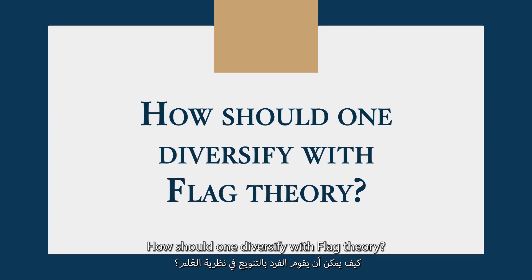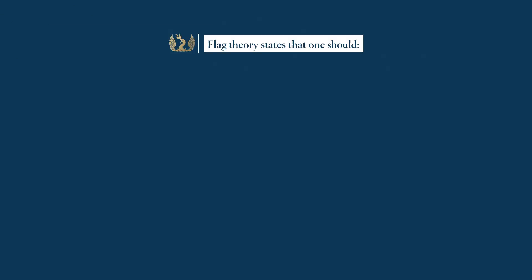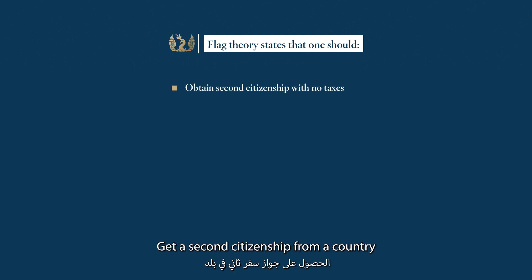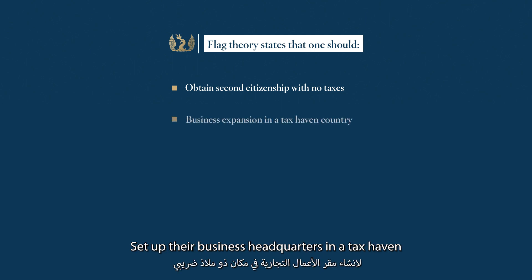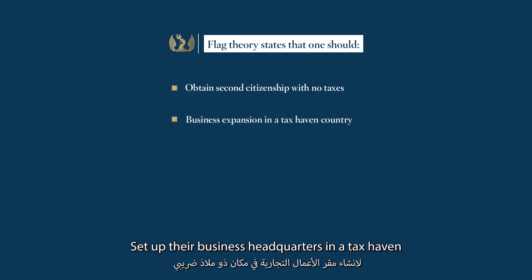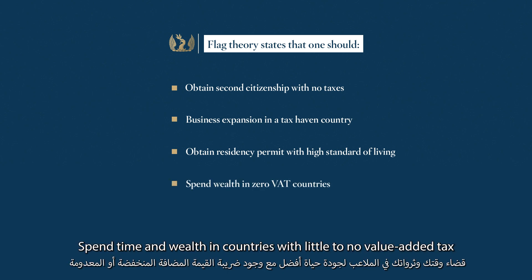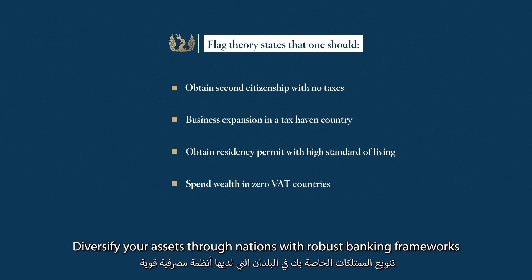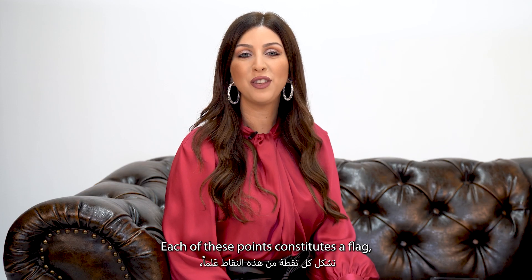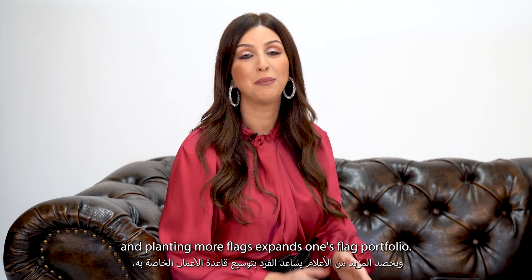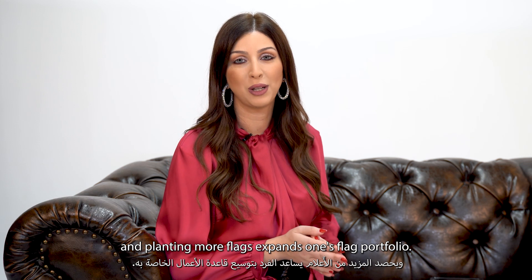How should one diversify with Flag Theory? Flag Theory states that one should get a second citizenship from a country that does not impose taxes on non-residents, set up their business headquarters in a tax haven, obtain a residency permit in a personal tax haven with a high living standard, spend time and wealth in countries with little to no value-added tax, and diversify your assets through nations with robust banking frameworks. Each of these points constitutes a flag, and planting more flags expands one's flag portfolio.